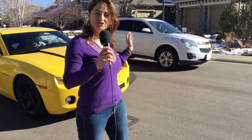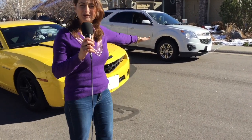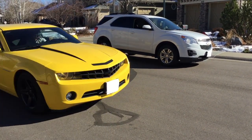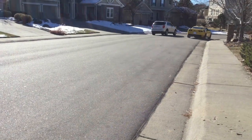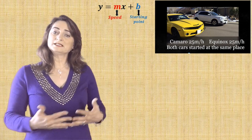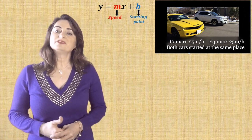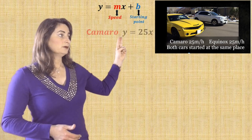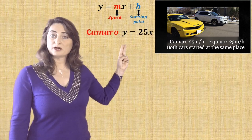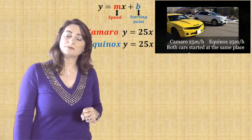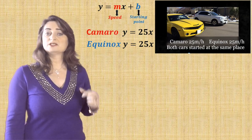Now the second scenario: the Chevy Camaro is going 25 miles per hour, and the Chevy Equinox is also going 25 miles per hour. The question is, when will they meet? As you saw, both cars from the beginning till the end were together, so they met all the time. Let's write the equations: the Camaro is y equals 25x and the Equinox is also y equals 25x, because both had a speed of 25 miles per hour and both started at the same location, so the starting point is 0.